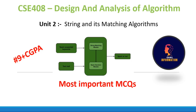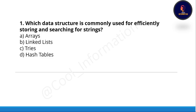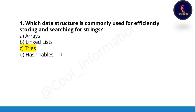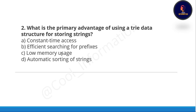Welcome everyone to the 9+ CGP MCQ series. In this video we will see MCQs of string and its matching algorithms, unit number two of CAC408 course. First question: which data structure is commonly used for efficiently storing and searching for a string? Options are array, linked list, tries, or hash table. Correct option is C — tries.